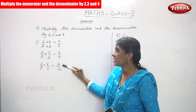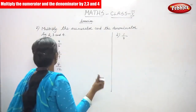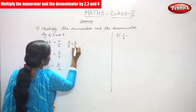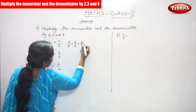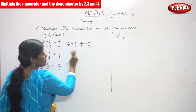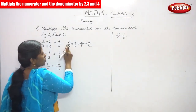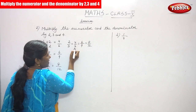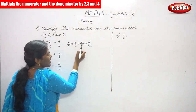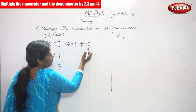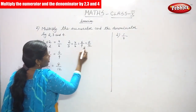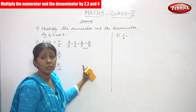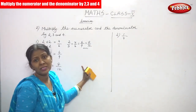The answer is 4 by 6, 6 by 9, 8 by 12. So 2 by 3 is equal to 4 by 6, which is equal to 6 by 9, which is equal to 8 by 12. So these are the equivalent fractions. 2 by 3 multiplied by 2 gives 4 by 6, multiplied by 3 gives 6 by 9, and multiplied by 4 gives 8 by 12. This is the answer — you can find the equivalent fractions using different multiples.